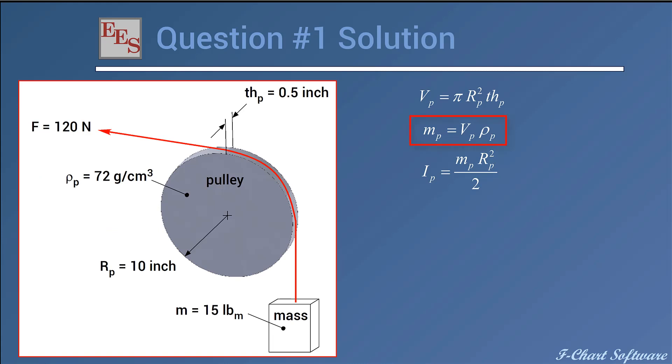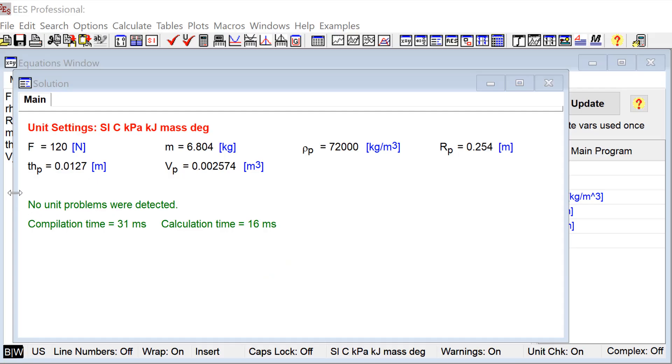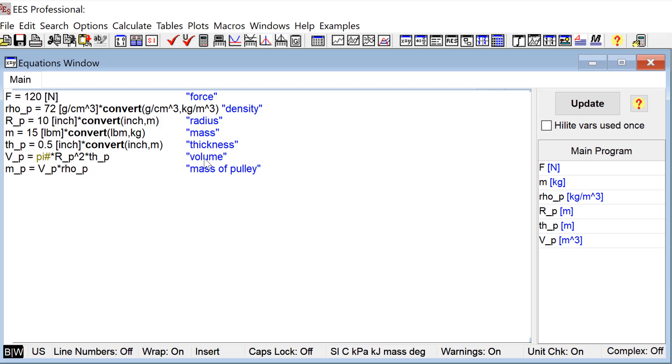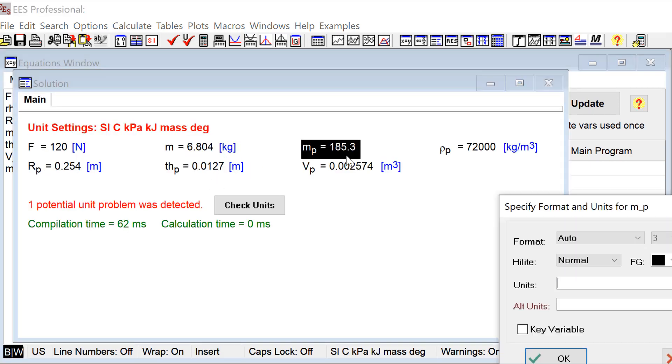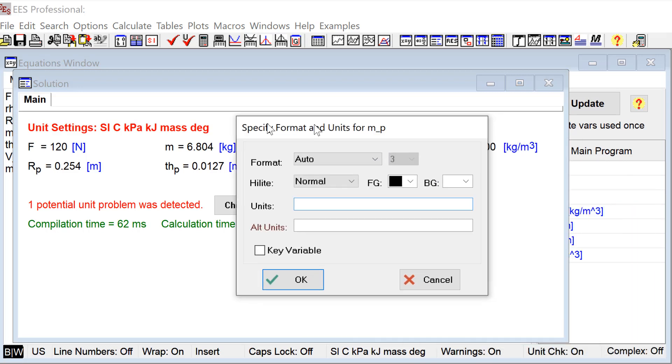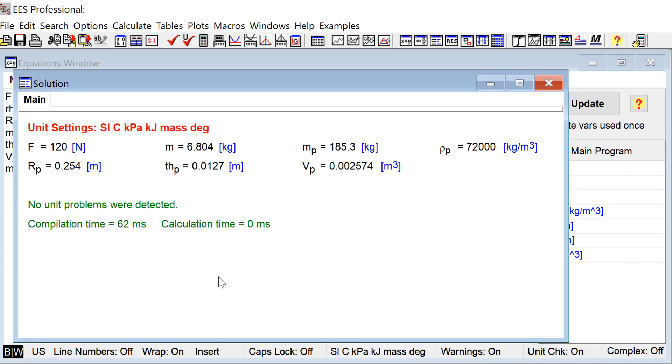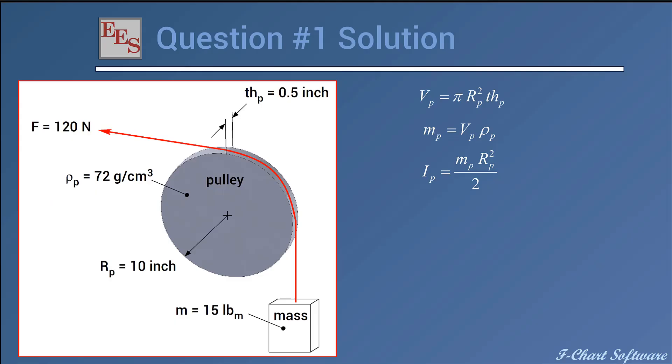The next equation is that the mass is the volume times the density. Again, I added one variable, mass, but I added one equation, so I might as well enter that into my equations window. I'll go ahead and solve and make sure the units of mass are kilograms.